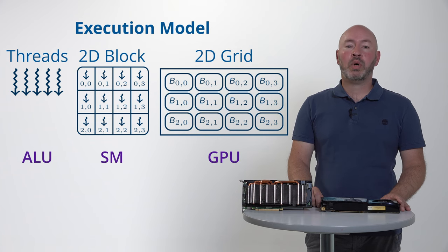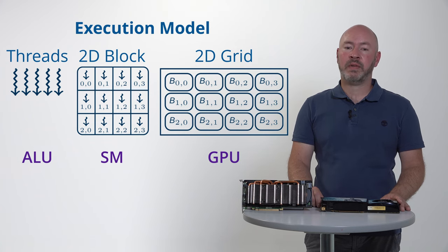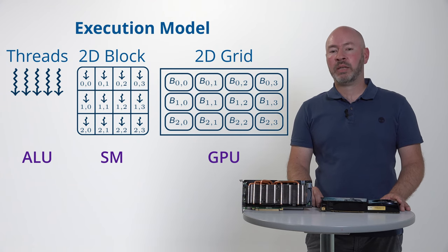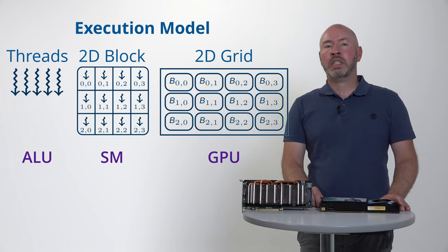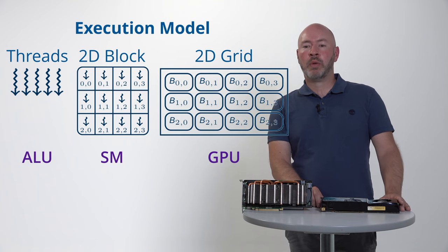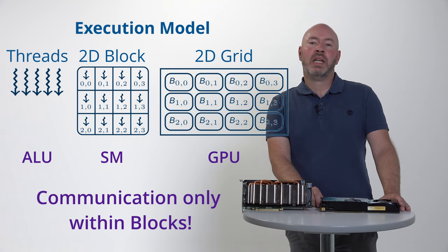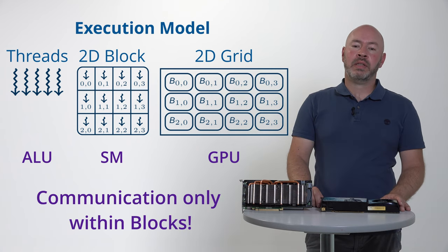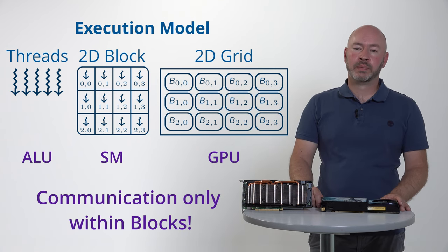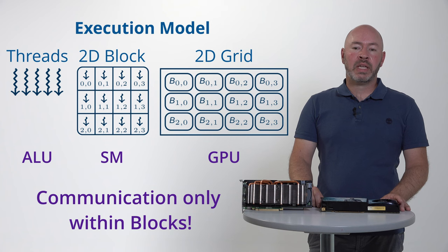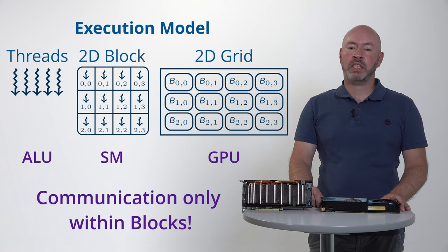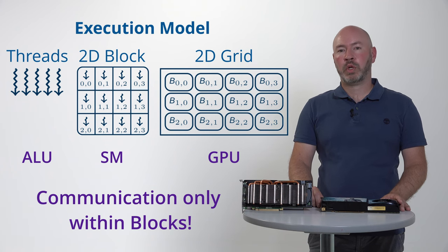An important consequence of this classification is the fact that threads within a block have access to a shared memory, which can be used to communicate and exchange data between threads, while there is no mechanism for communication between threads of different blocks.